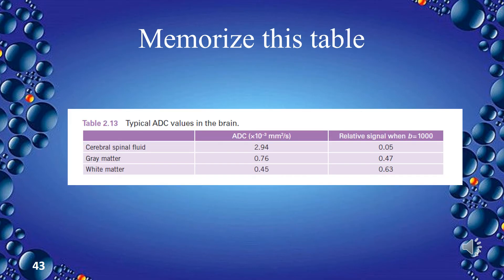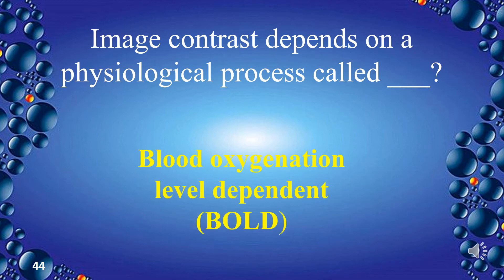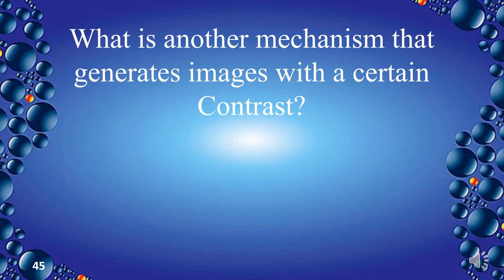Memorize this table: CSF ADC is 2.94 with relative signal of 0.05 at b=1000. Gray matter ADC is 0.76 with relative signal of 0.47. White matter ADC is 0.45 with relative signal of 0.63. Image contrast that depends on a physiological process is called blood oxygenation level dependent (BOLD). Another mechanism that generates images with certain contrast is magnetization transfer contrast (MTC).